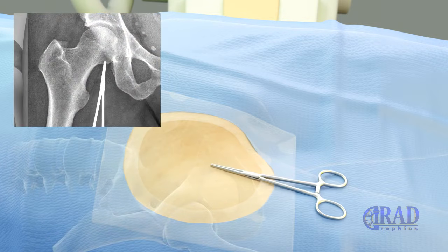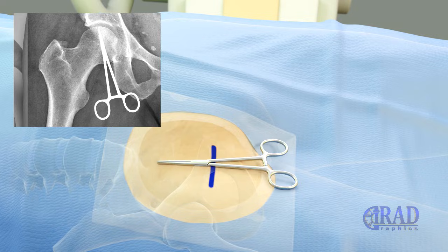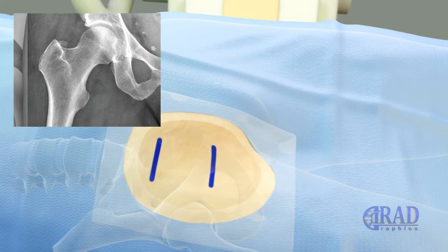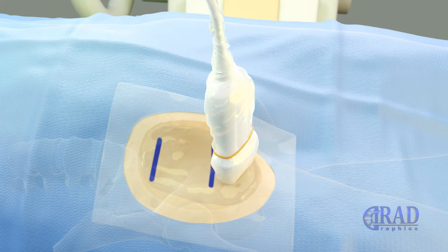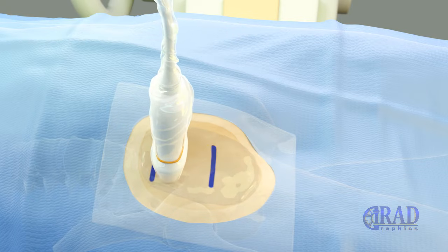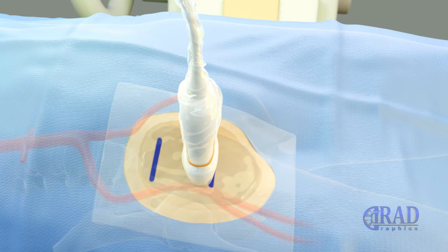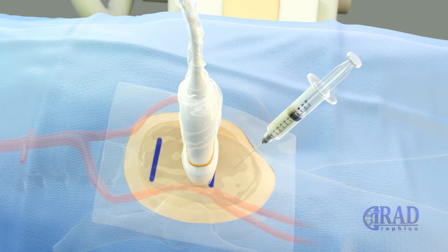As the first step, skin in the right groin area is marked based on the upper and lower margins of the right femoral head. Once the location of the common femoral artery for access is identified under ultrasound, the skin entry site is numbed by injecting lidocaine.